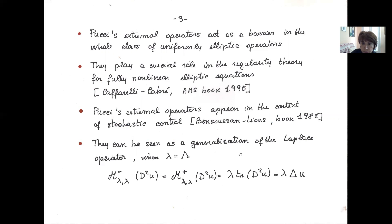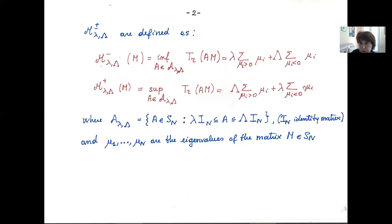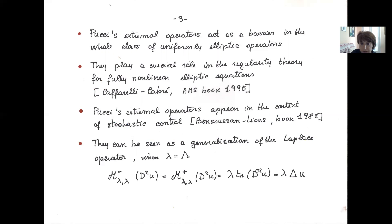They were also studied in the context of stochastic control theory. When the two constants small lambda and capital lambda are the same, the operator reduces to a multiple of the trace of the Hessian matrix of U — which means it is just a multiple of the Laplacian, so we are back in the linear theory.